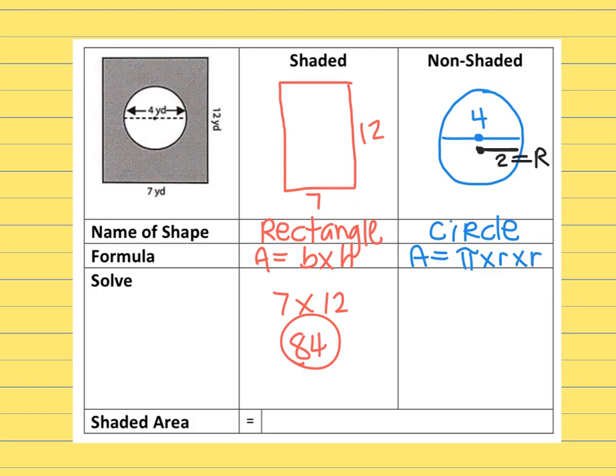3.14 times—and in this circle, the radius, remember, is 2, not 4. So I'm going to use 2. 3.14 times 2 times 2. I'm going to go ahead and do 3.14, but do 2 times 2 is 4. And then 3.14 times 4 is 12.56.